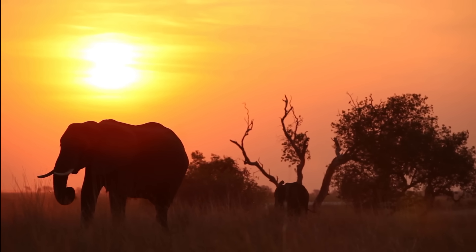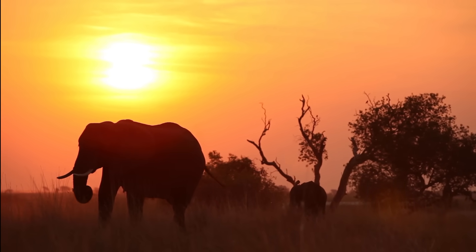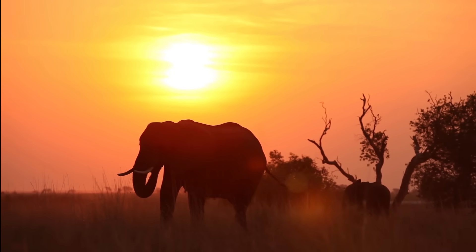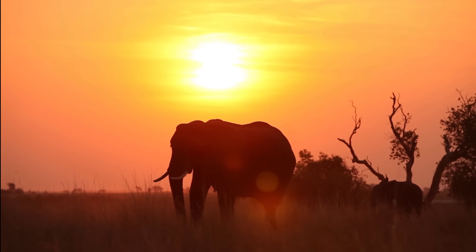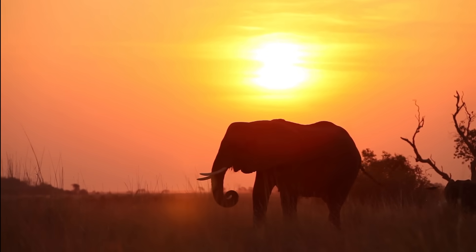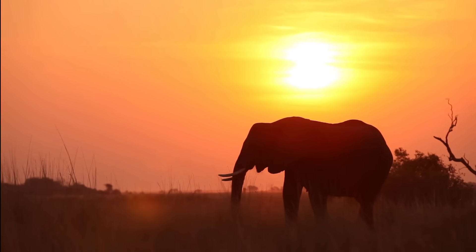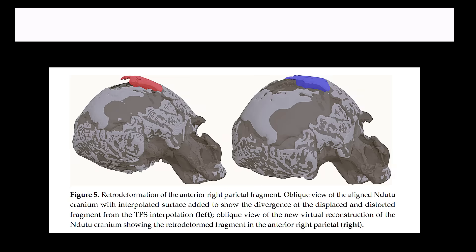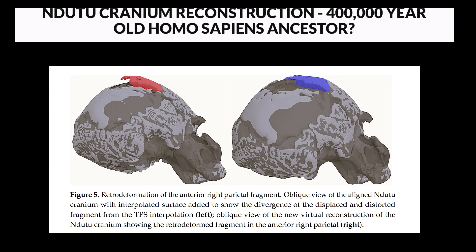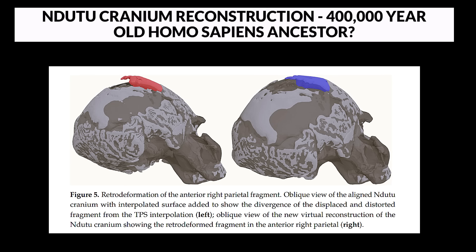The Ndutu cranium was badly damaged and fragmented when it was found. The occipital was well preserved and almost completely intact. The temporals were damaged; the left temporal was more complete than the right. The parietals were shattered — the majority of the right parietal was reconstructed along with fragments of the left parietal. The frontal was mostly gone, with only a small piece of the right side above the brow ridge remaining. The pieces of the skull were repaired and reconstructed.